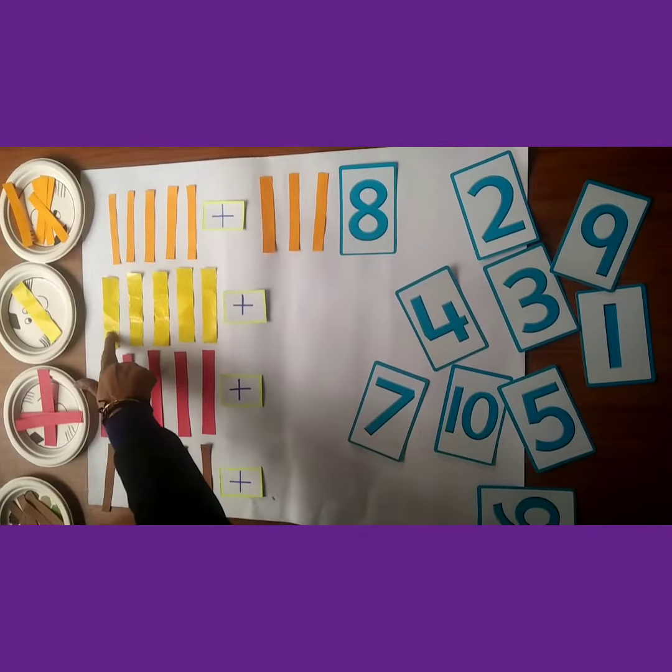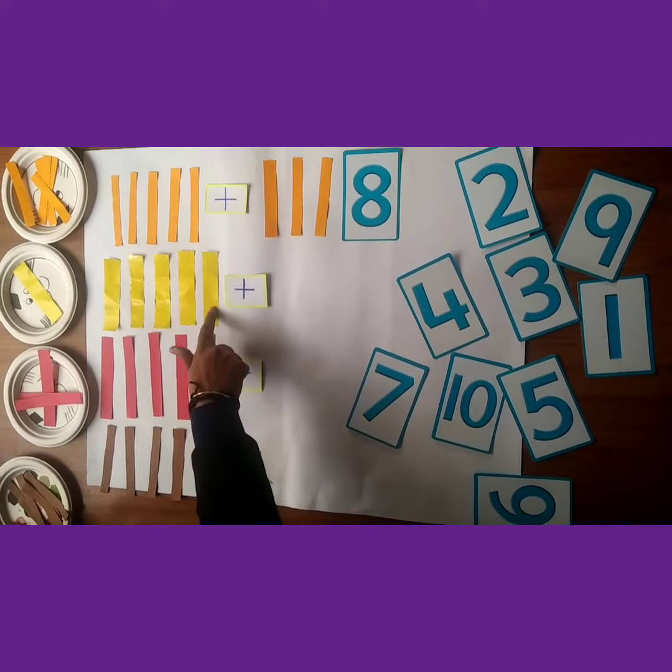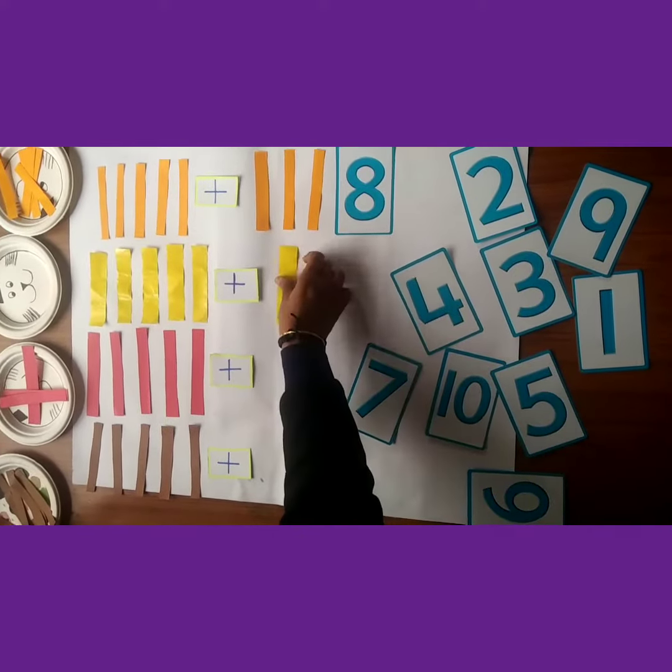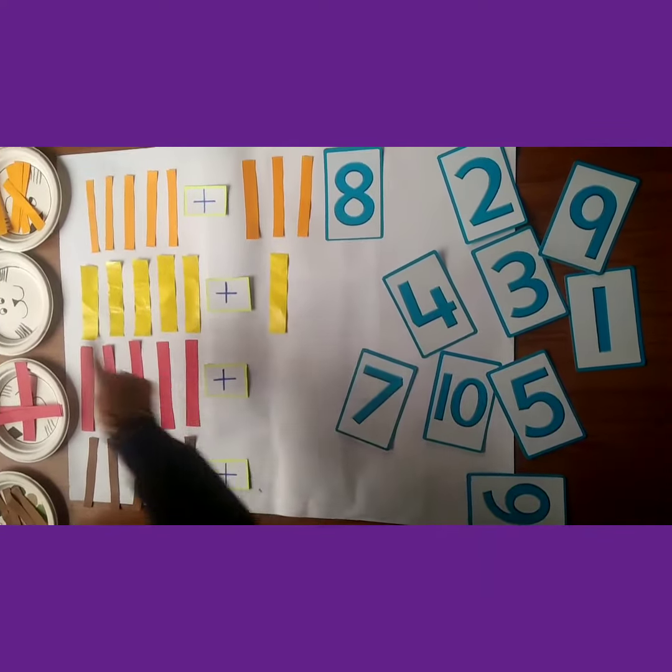In this row: 1, 2, 3, 4, 5. 5 strips. We add 1 more strip. Now, how many strips?